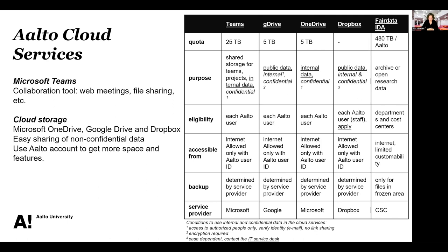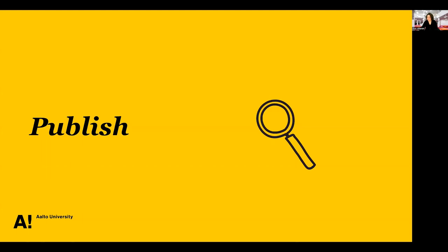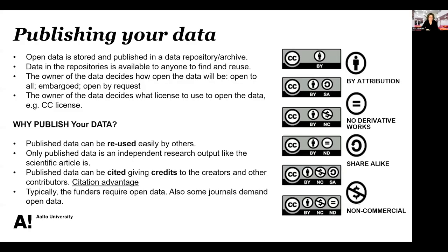Towards the end, once you've finished your research work, you might choose to publish your research data and make it findable to the outside world — much in the same way as you would have a research article. When you publish your research data, it becomes its own research output. Open data is stored and published in a data repository or archive, and is available for anyone to find and reuse. As the owner of the data, you decide how open you want it to be — you might want it to be embargoed so you have time to publish your articles first, or opened by request. You also decide what license to use, which might be a CC license with options like attribution, no commercial derivatives, share-alike, or no derivatives.